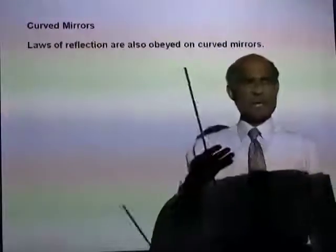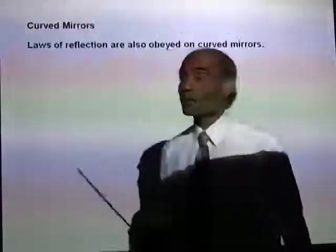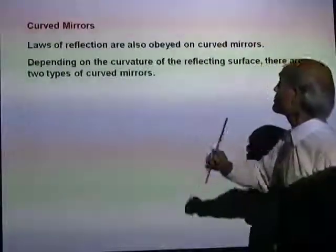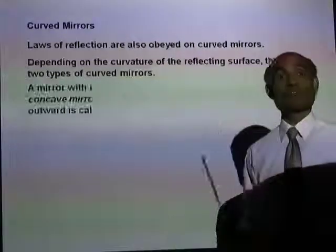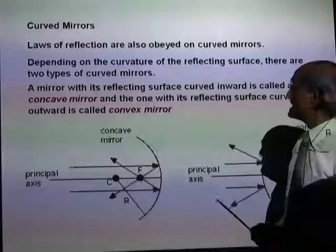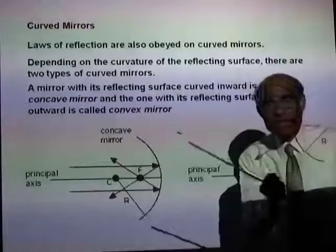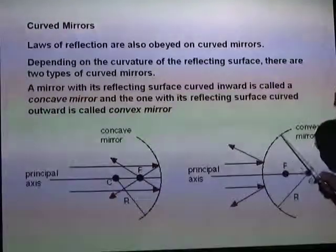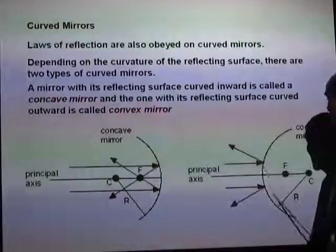How about curved mirrors? They are very common. If you go to a hotel, they have a curved mirror which makes your face look bigger for shaving. The laws of reflection are also obeyed on curved mirrors. Depending on the curvature of the reflecting surface, there are two types of mirrors: a concave mirror, where the reflecting surface is caved in, and a convex mirror, where the reflecting surface is caved out.